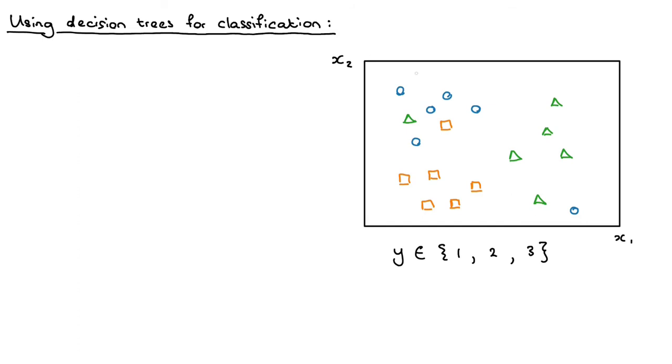We can say that each training item is assigned one of three labels, maybe 1, 2, and 3, where 1 corresponds to the blue circles, 2 corresponds to the orange squares, and 3 corresponds to the green triangles.